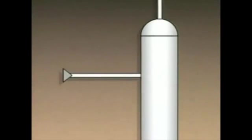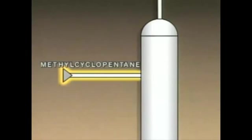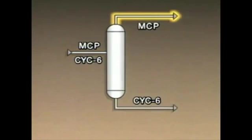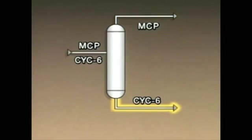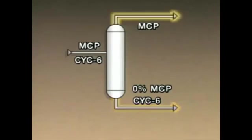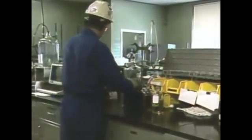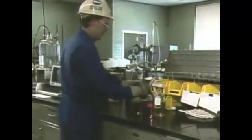Product composition measurements are made to ensure that the products of a distillation system are on spec. For example, the tower represented here separates a feed that contains methyl cyclopentane (MCP) and cyclohexane (CYC6). The MCP is the lighter component and is removed as the overhead product; the heavier CYC6 is the bottoms product. The spec for the bottoms product is 0% MCP — all of the MCP should be removed as overhead product. The spec for the overhead product is less than 5% CYC6. Samples of the products are taken and sent to the lab on a regular basis for indirect composition measurements.